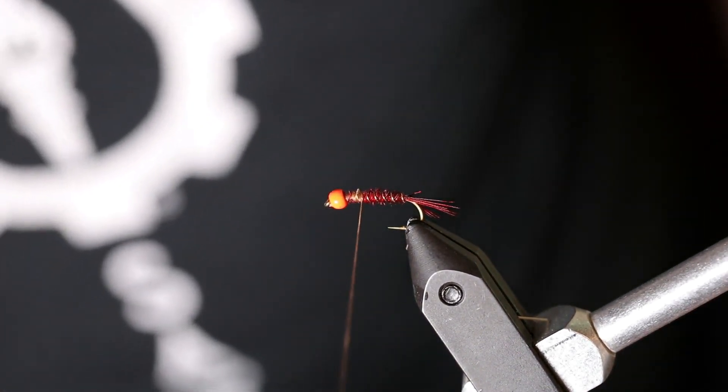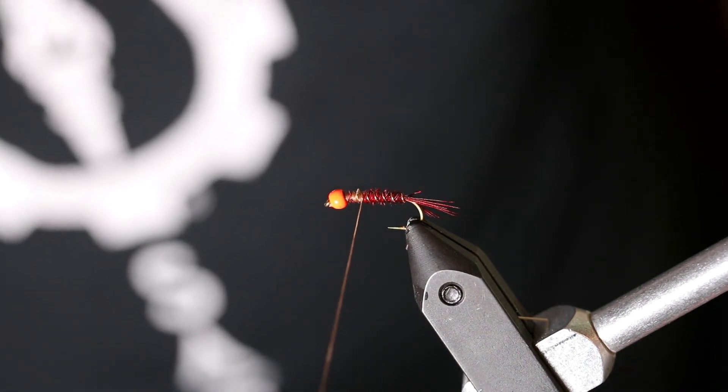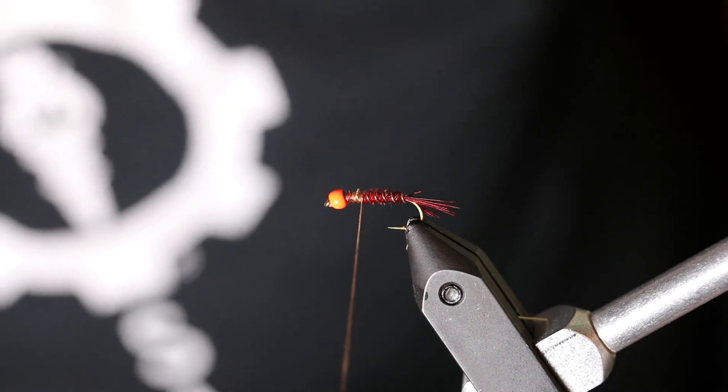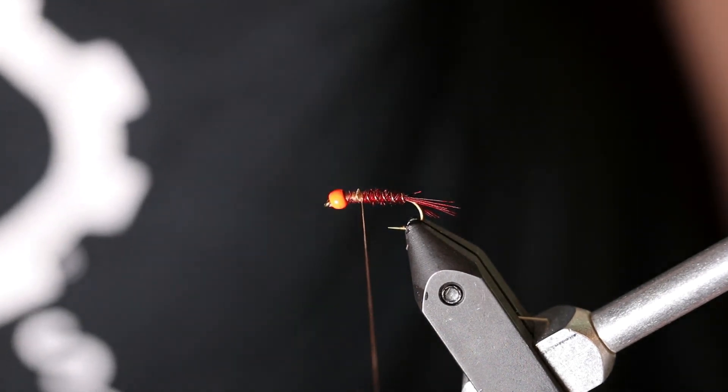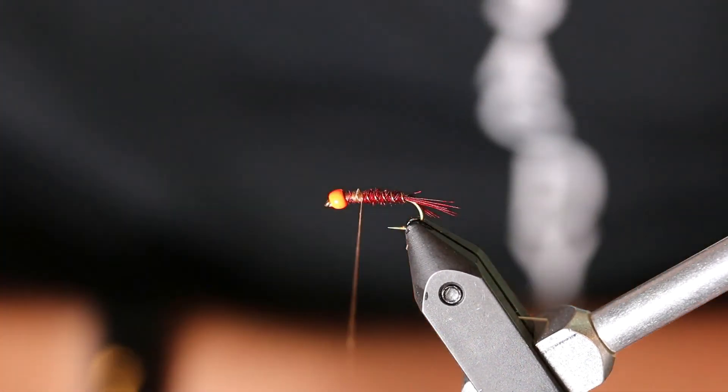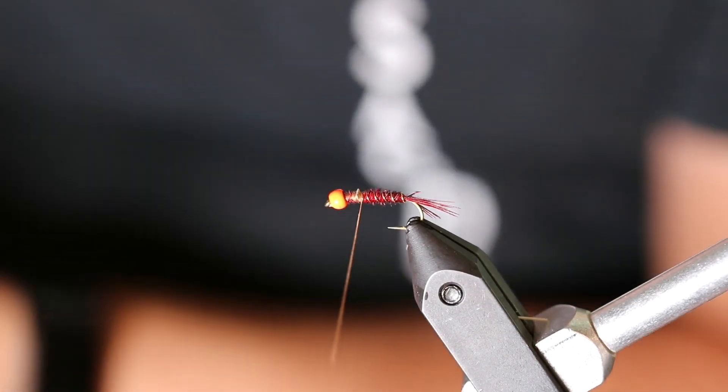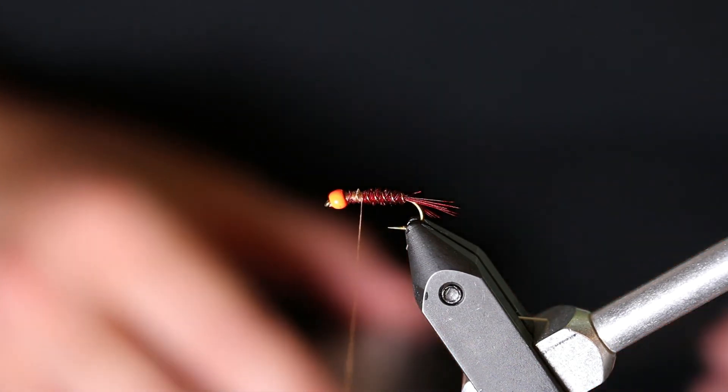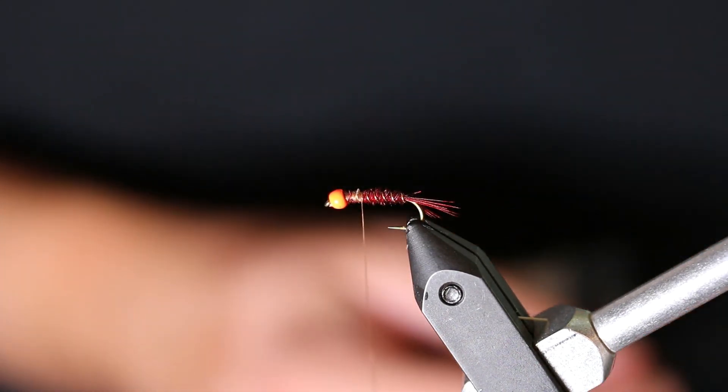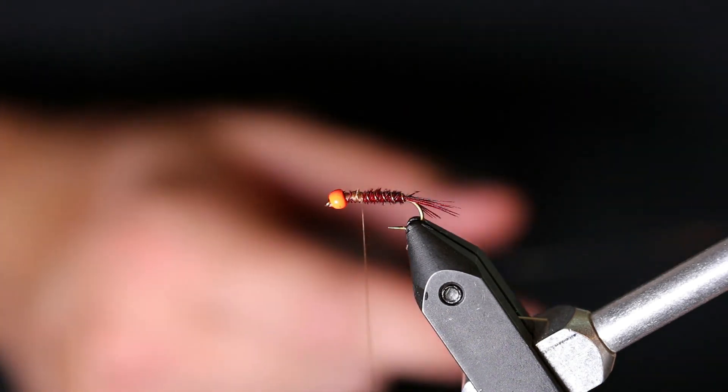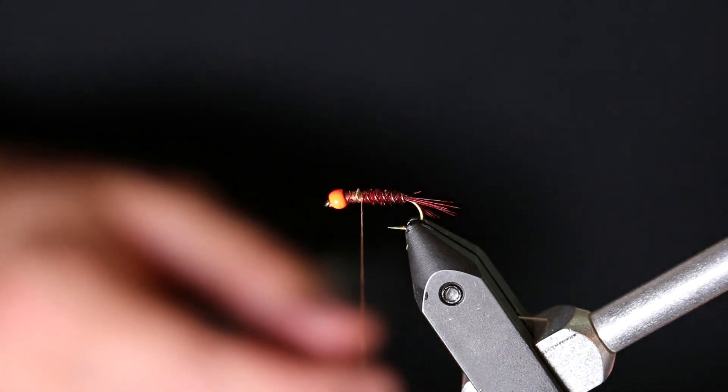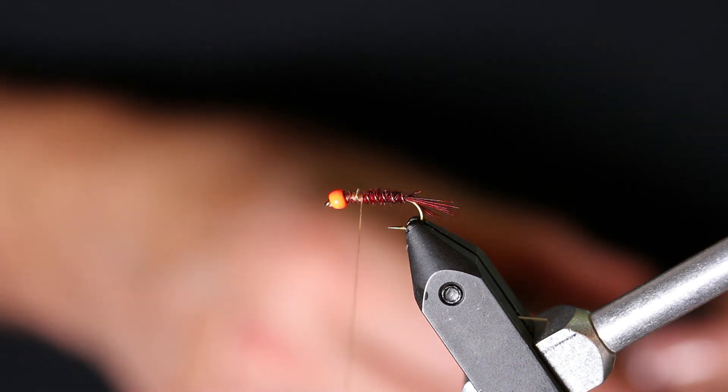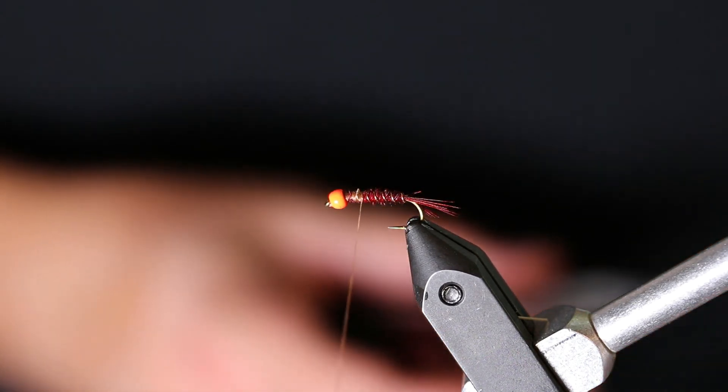And here we are going to tie in our peacock hurl. We are gonna start the part of the shank of the hook. We are going to lay it down. Now this is a nice one.